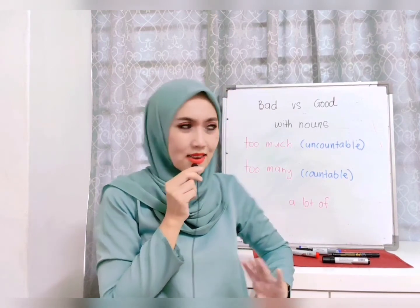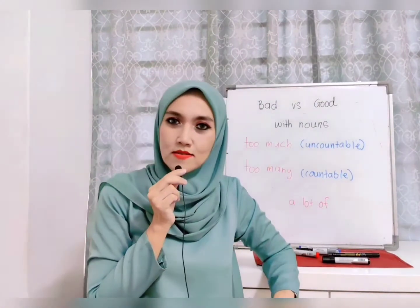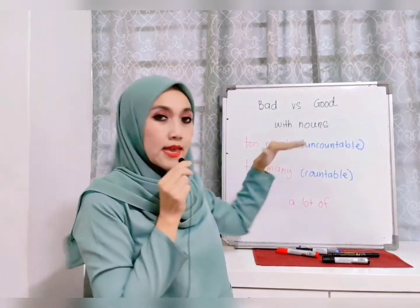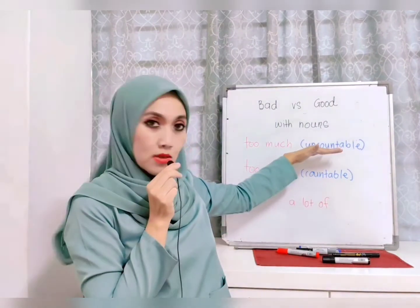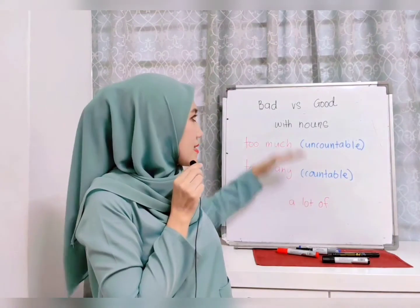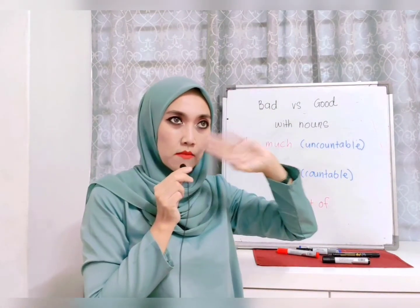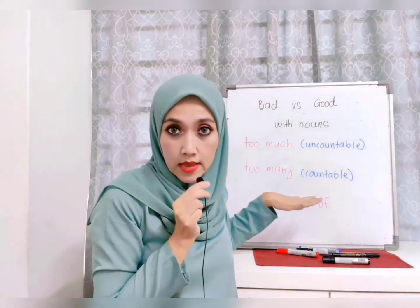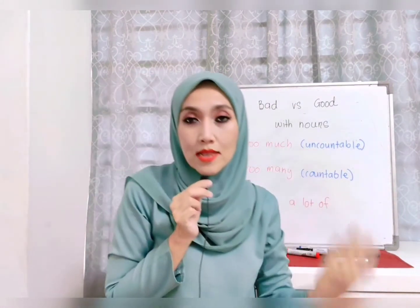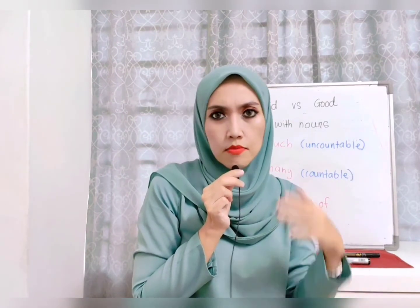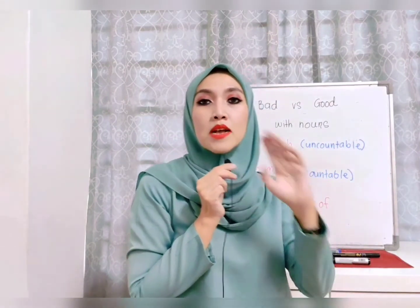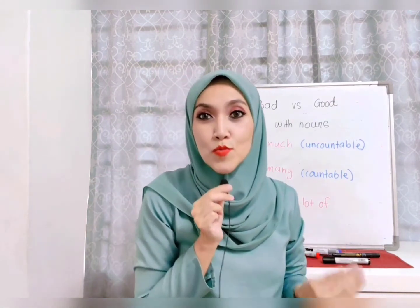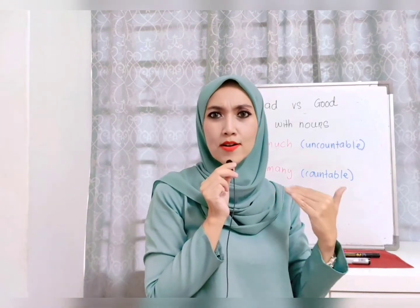So, can you understand bad versus good with nouns? Again: 'too much' is for uncountable nouns — something you can't count; 'too many' is for countable nouns — something you can count. When you want to relate to a particular situation that is bad or something you don't prefer, you will use 'too much' or 'too many'. But when it comes to something you like — when you want to express that you like something in a particular situation — you use 'a lot of'. I think you will definitely use it correctly from now on.